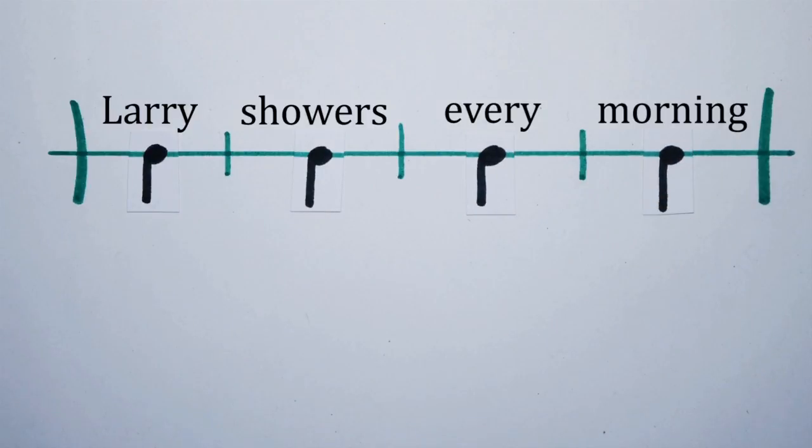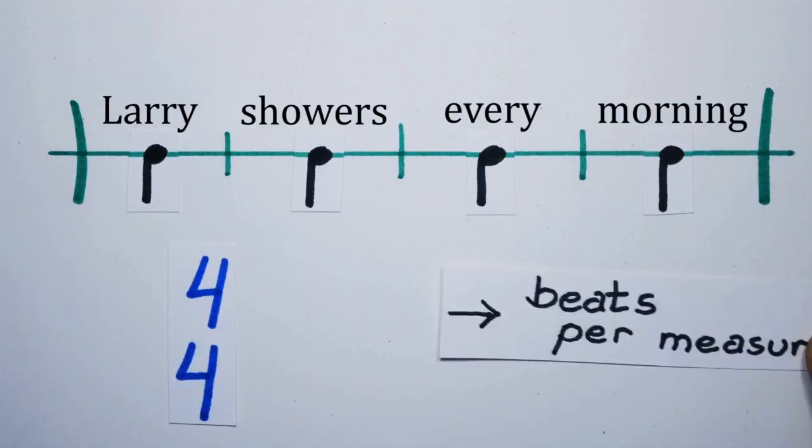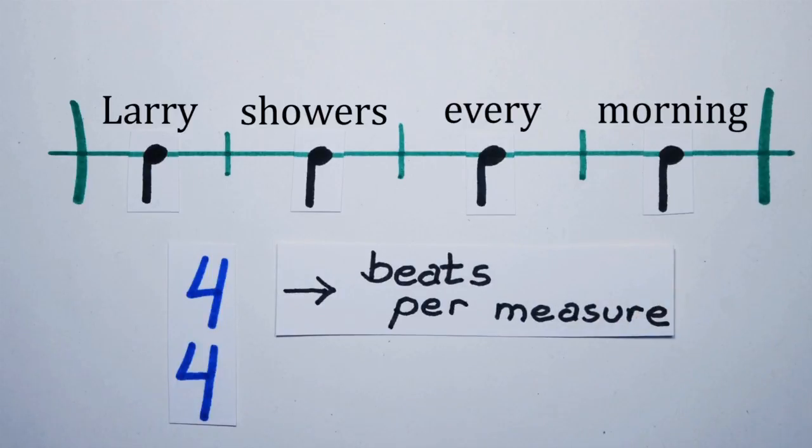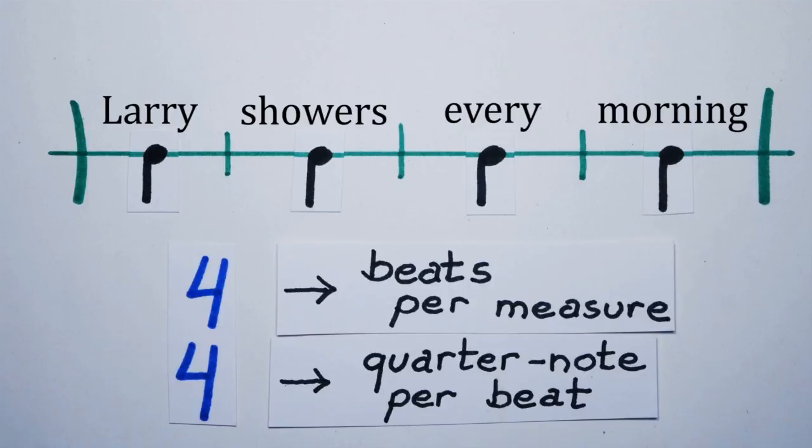Therefore, the time signature for this measure is 4-4. The top number means four beats per measure and the bottom number means one quarter note per beat.